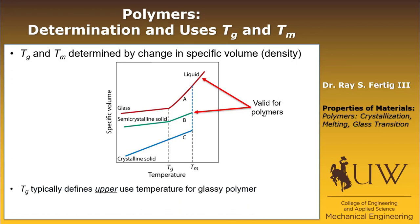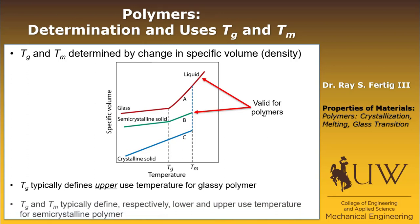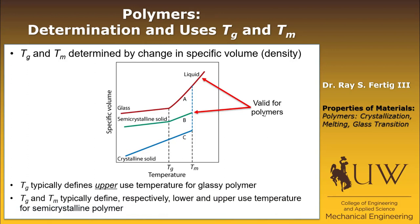How do we use these temperatures? The glass transition temperature typically defines the upper use temperature for a glassy polymer. For example, in epoxy carbon fiber and epoxy glass fiber composites, we always want to use the epoxy below the glass transition temperature. In contrast, for a semicrystalline polymer, TG typically defines the lower bound temperature, and TM, the melting temperature, is the upper use temperature.